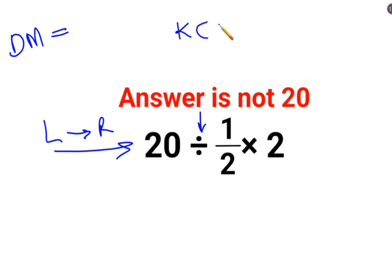When you have a fraction involved, you will follow the acronym KCF, where K stands for keeping the first number as it is, C stands for changing the division sign to multiplication, and F stands for flipping or taking the reciprocal of 1/2, which is 2, multiplied by 2.